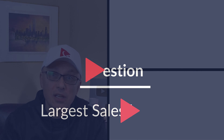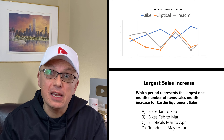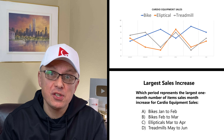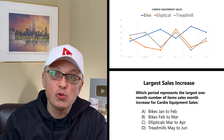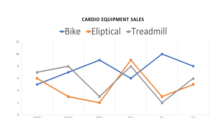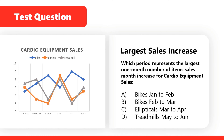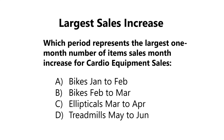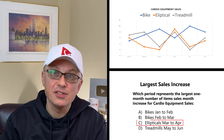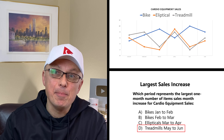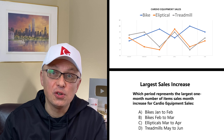A lot of times you get a question asking you to determine the largest sales increase from a graph. In this case, you're presented with a chart showing sales of cardio equipment from January to June: bikes (blue line), ellipticals (orange line), and treadmills (gray line). The question asks which period represents the largest one-month number of item sales increase. Choices are: A) bikes January to February, B) bikes February to March, C) ellipticals March to April, and D) treadmill May to June.